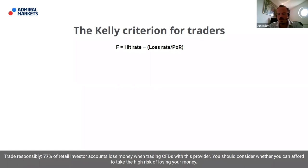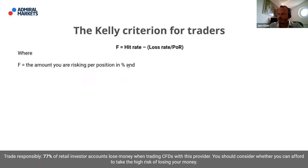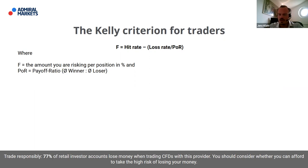Here is the Kelly criterion formula for traders — take a screenshot if you like. The formula is: f = HR − (LR / POR), where f is the percentage of your capital to risk per position, HR is the hit rate, LR is the loss rate, and POR is the payoff ratio — the ratio of your average gain to your average loss. I do not recommend using this without the necessary adaptations.